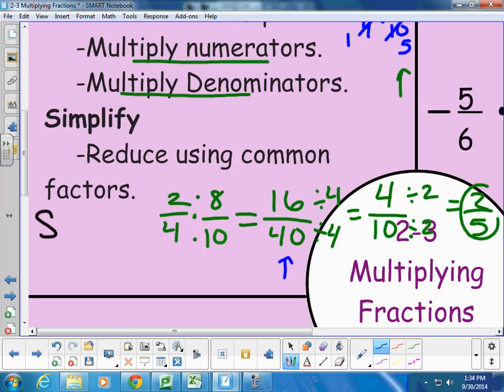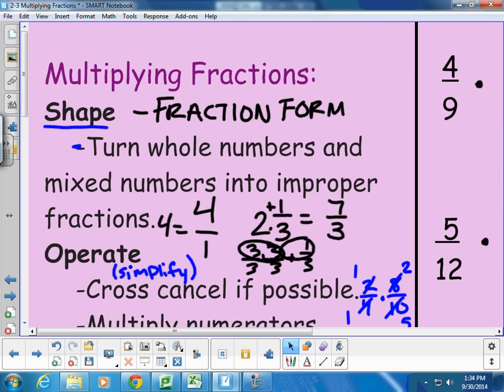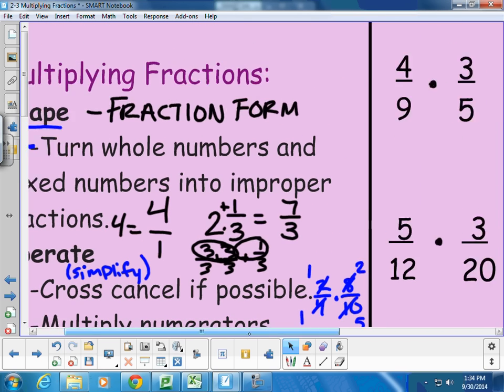I like to simplify ahead of time because sometimes the bigger numbers get more difficult to simplify because there's more factors that could go into them, but it's really up to you on what you're going to do there. But you do need to remember the steps. Shape, change into fraction form, operate, cross-cancel if you need to, but then multiply straight across, numerators, and then denominators, and then to simplify if you still need to. Shape, operate, simplify.